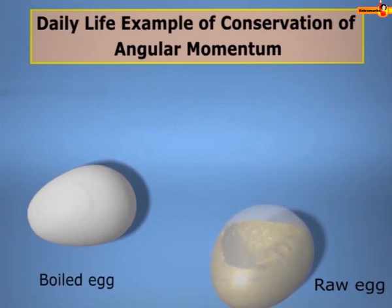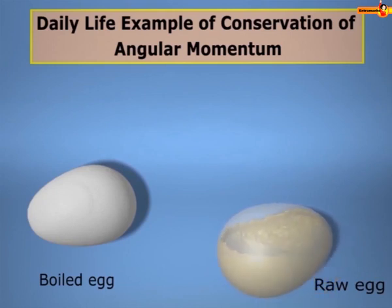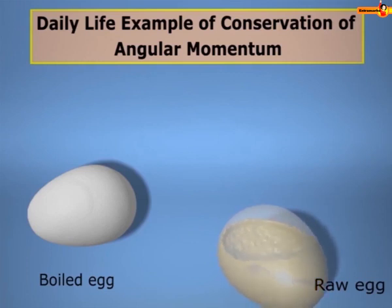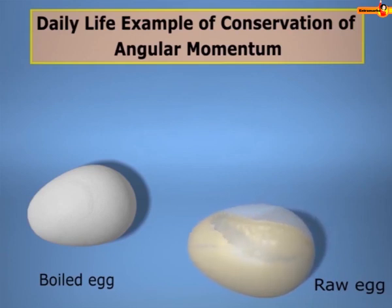Moreover, when you try to stop them from spinning, the boiled egg comes to rest quickly, but the raw egg starts spinning again if you let it go. This is because in the boiled egg the entire mass comes to rest as soon as the force is applied, whereas in the raw egg only the outer shell comes to rest — the liquid inside keeps rotating and causes the egg to spin again.